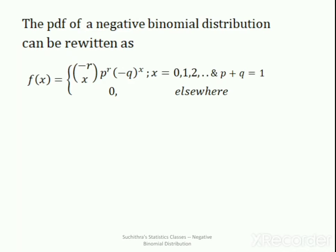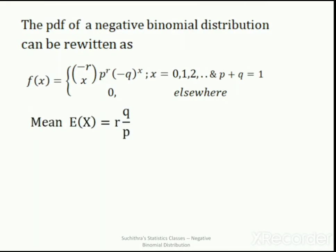The PMF of a negative binomial distribution can be written as f(x) = (−r C x) · p^r · (−q)^x, for x = 0, 1, 2, …, p + q = 1, and equal to 0 elsewhere. The mean of a negative binomial distribution is r·q/p and the variance is r·q/p².